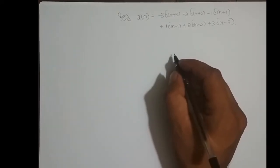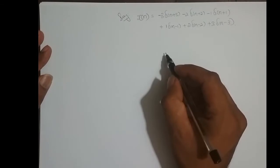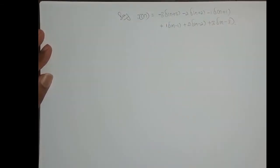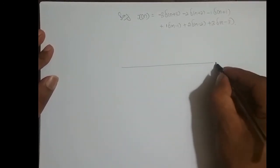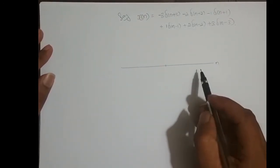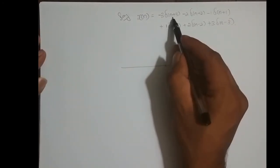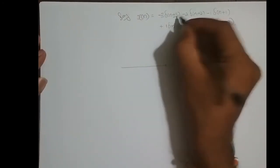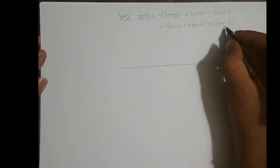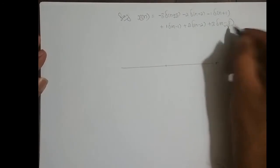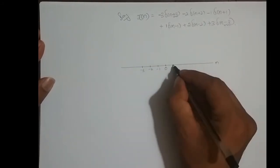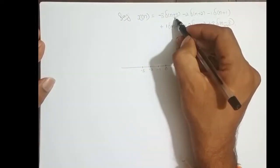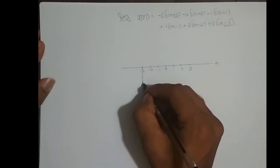This is a discrete time signal as per the previous video. How do we plot this discrete time signal? From where to where does the signal start and end? It starts from n equal to minus 3 — because of this term — and ends at n equal to plus 3 — because of this term. So the range is 0, minus 1, minus 2, minus 3, 1, 2, 3.